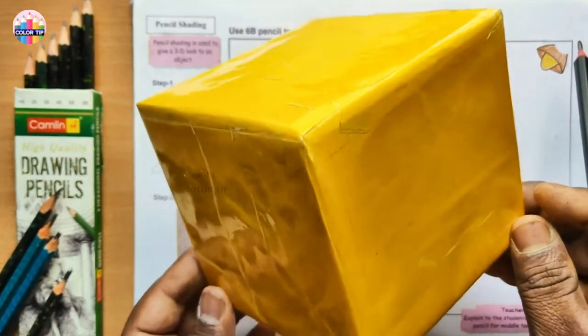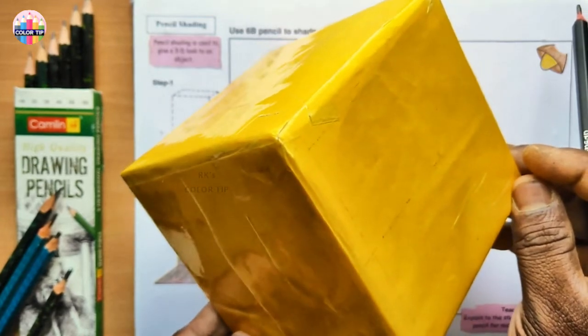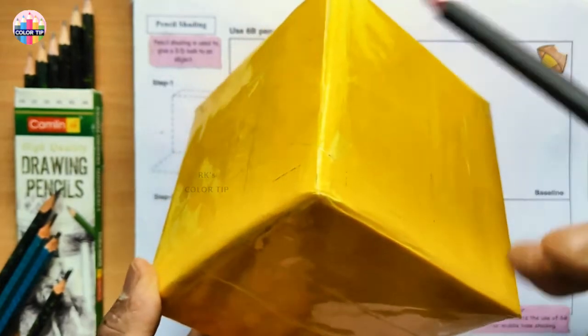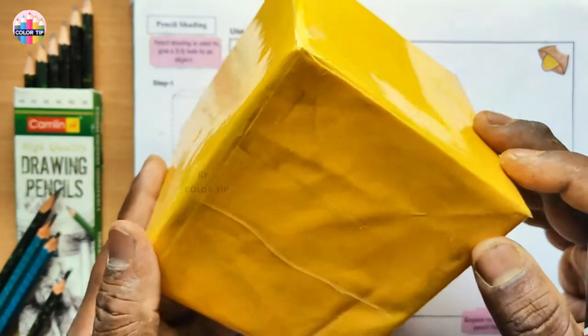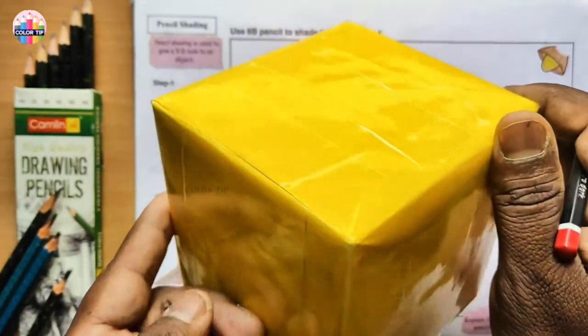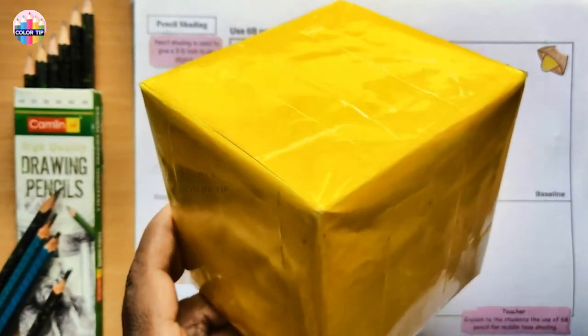If I tilt more like this, see, now these two faces are bright but this one is a darker one. If I turn it towards the light source, now it became the bright one. These two faces became dark.